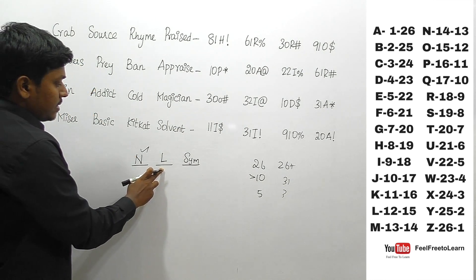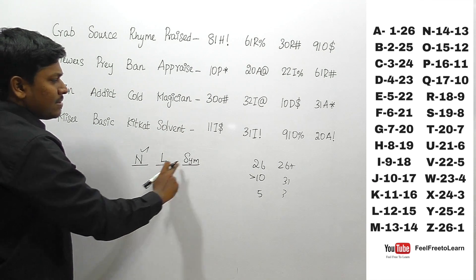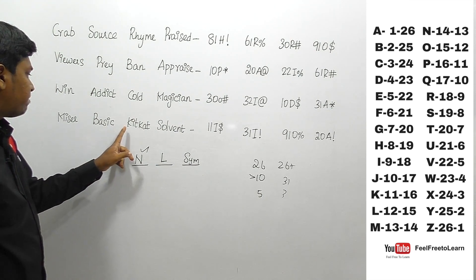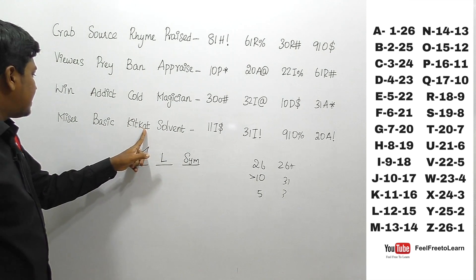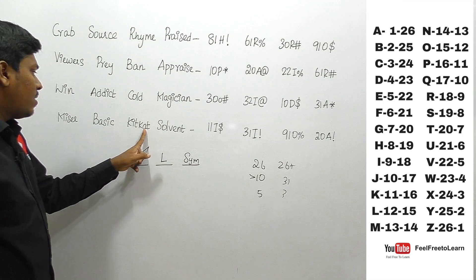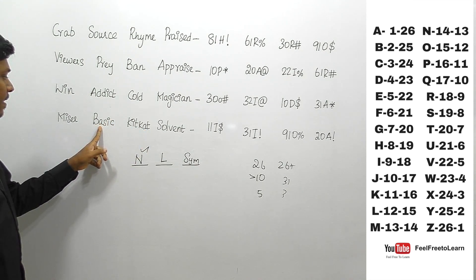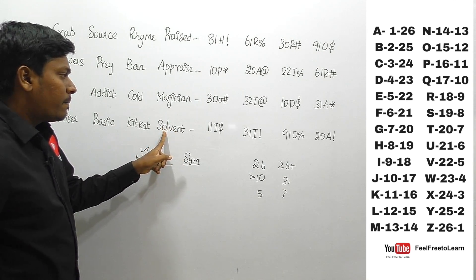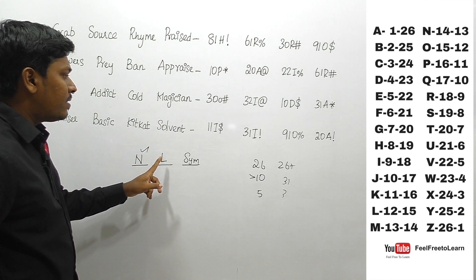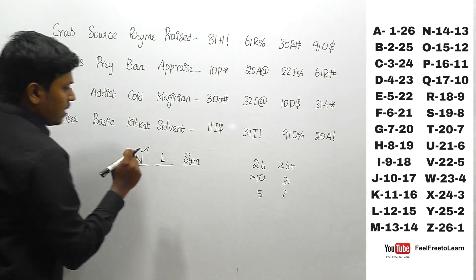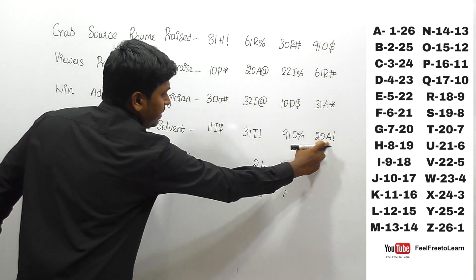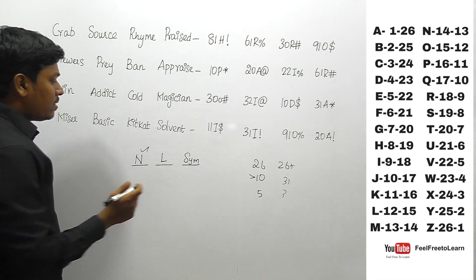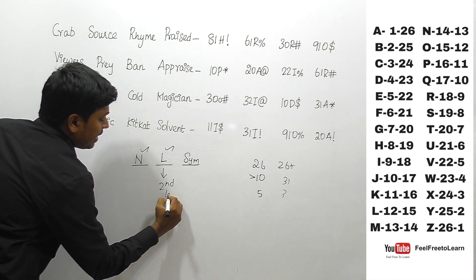Let me concentrate on the letters instead. The code uses the letter A in one case, so I think the second letter of the word is being used. For 'solvent', the second letter is O, so O is used. For another word, the second letter is A, so A is used. For 'kitkat' and 'miser', both have second letter I, so I is used twice. So the letter coded is the second letter of every word.